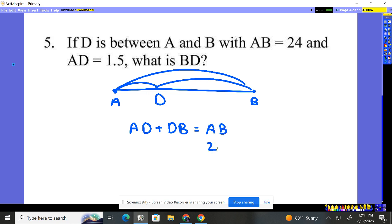AB is 24, and AD is 1.5. So we need to find BD or DB—they're the same thing. The distance from B to D is the same as D to B.